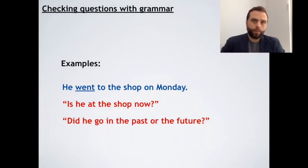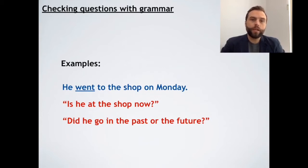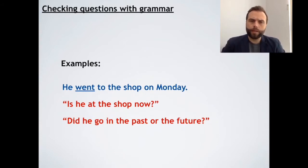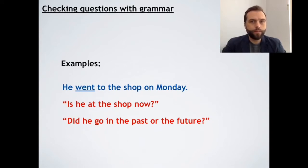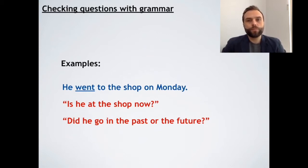I'm going to give you some examples of different grammar and examples of checking questions. Here is the first one — the sentence, this could be the target language: 'He went to the shop on Monday.' The underlined word is 'went.' So I guess this lesson is about simple past verbs, or perhaps there's been some confusion about irregular simple past verbs. The checking questions, shown in red, are: 'Is he at the shop now?' — No, he's not at the shop now. 'Did he go in the past or the future?' — Of course, the answer is the past. Those are some simple checking questions for this expression. There are more ideas later in this video about checking with tenses.